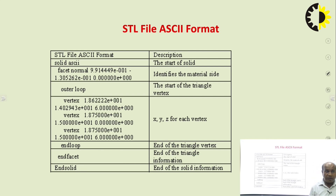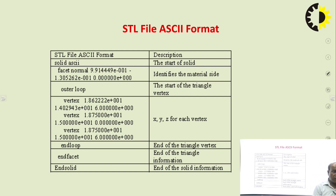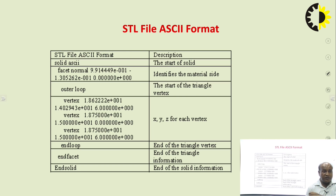This is the STL file ASCII format. We can see this format. The STL file starts with a solid declaration. First, we have to define a facet normal by its X, Y, Z coordinates. This normal is defined as the orientation or direction of the facet — basically to identify the material side we are going to consider.